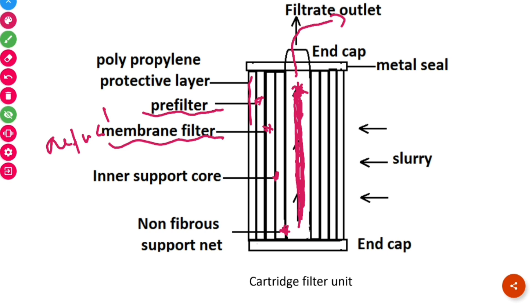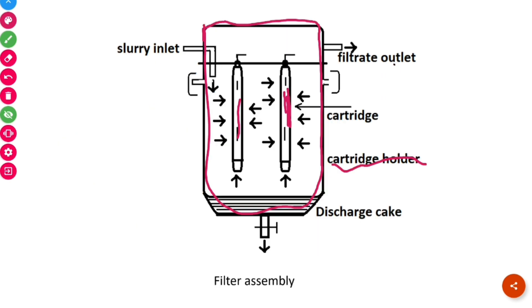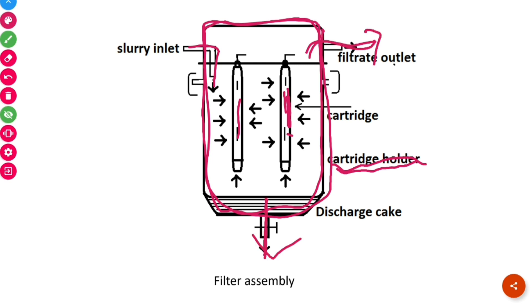A number of single cartridge filter units can be placed inside a cartridge holder. Inside this cartridge holder, we can arrange multiple single cartridge filter units. The cartridge filter is a thin porous membrane containing both pre-filter and actual filter combined into a single unit. The cartridge holder contains a slurry inlet, a filtrate outlet, and a discharge outlet through which the discharge cake is removed.